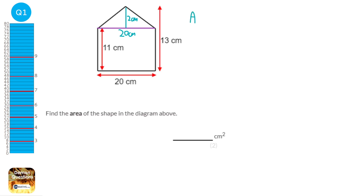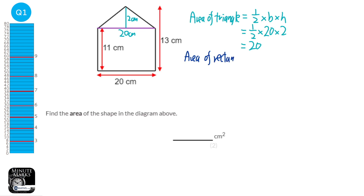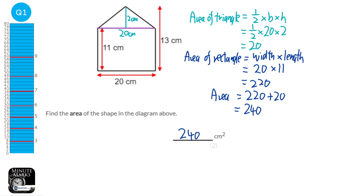Let's work out the area of the triangle first. That's going to be half times base times height: half times 20 times 2 gives us 20. Now let's work out the area of the rectangle — that's just width times length: 20 times 11 is 220. To find the total area we add those together: 220 plus 20 is 240. The units are all in centimetres, so the area units will be centimetres squared.